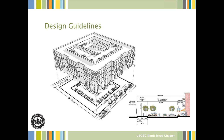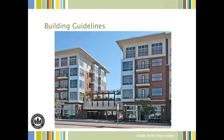Design guidelines referenced in the LEED ND system include form-based code. It looks at the transect of the street — the section showing how street trees, parking, and pedestrians interact — and the building-street-to-building street width-to-height ratio. It credits diverse use of space and mixed-use development centers.